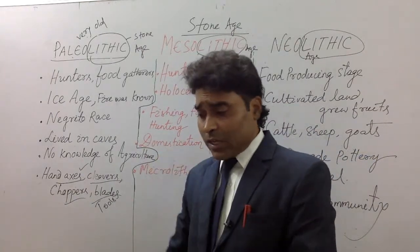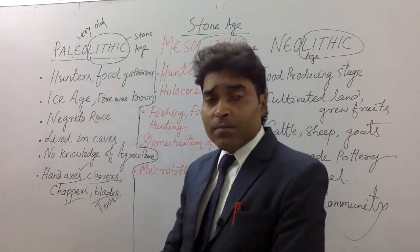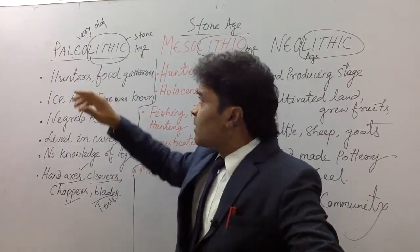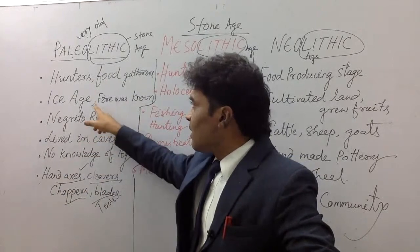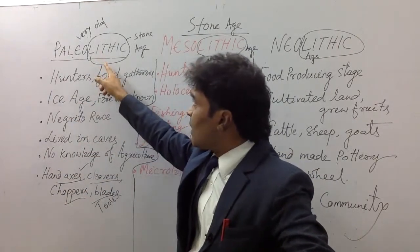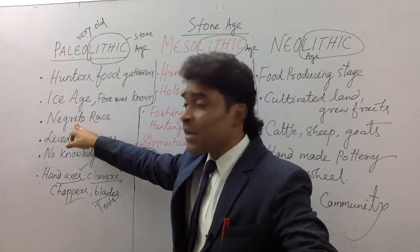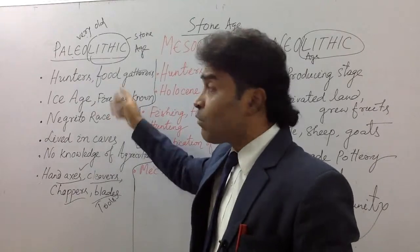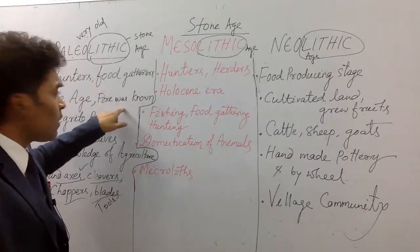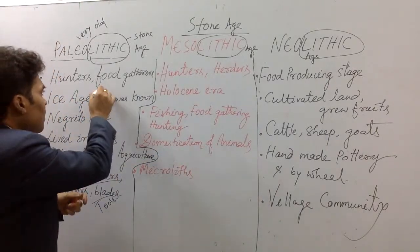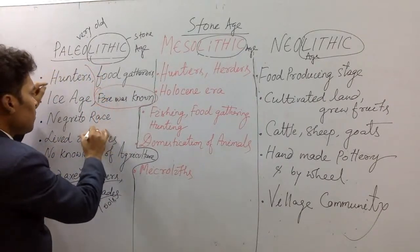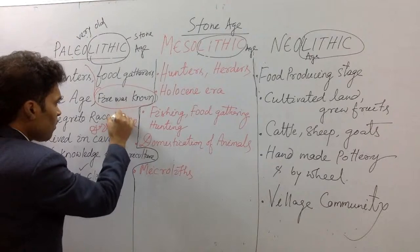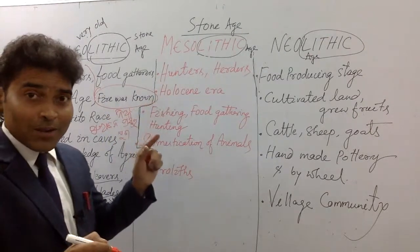So what I mean to say is that this stage — the Paleolithic age — is very important, and many exam questions may come from here. For example: Paleolithic age belongs to which age? Answer: Ice Age. Paleolithic age belongs to which race? Answer: Negrito race. In the Paleolithic age, they had no knowledge of fire.